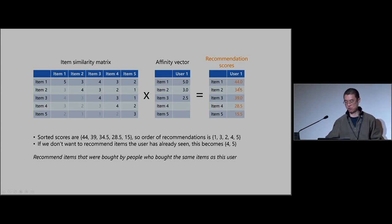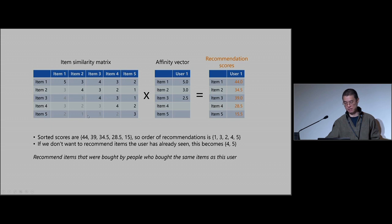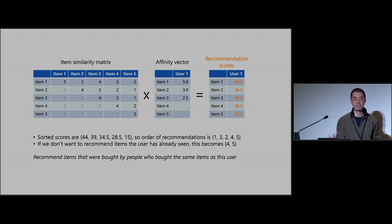So how would you explain this? If someone wants to know why item number three is second highest on the list, you can say: item number three has a high affinity with items one and two, item one has a strong affinity for this user, item two has a strong affinity for this user — and that's why this score is so high. Conversely, item five has a low score because it has low similarity to items one, two, and three. You recommend items that are similar to what this user has bought.